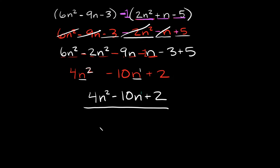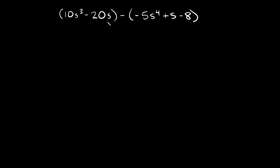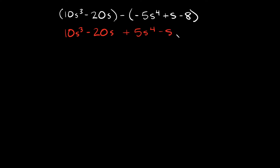Let's do one more example. Here we have in parentheses 10s cubed minus 20s, and then minus the set of parentheses which has negative 5s to the fourth plus s minus 8. So again, first step is dropping the parentheses and changing all of these signs: negative 5s to the fourth turns into positive 5s to the fourth, positive s turns into minus s, and negative 8 turns into positive 8.